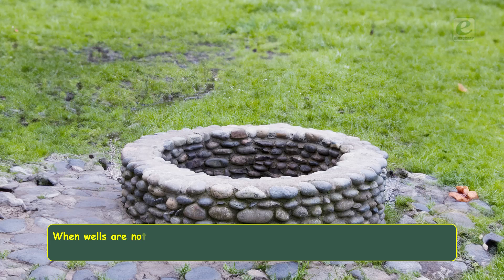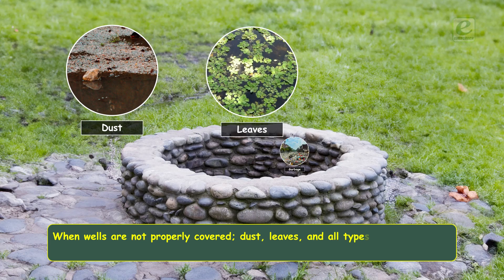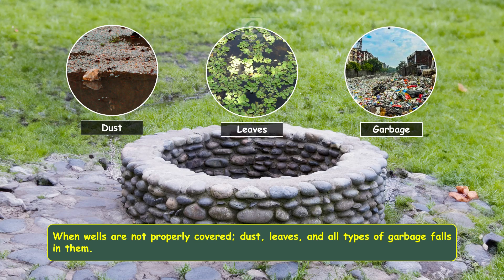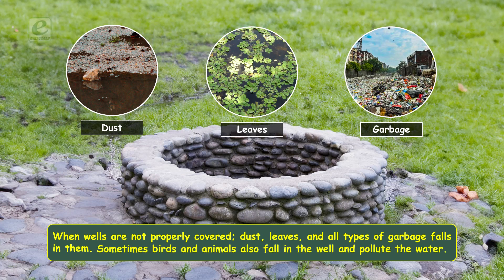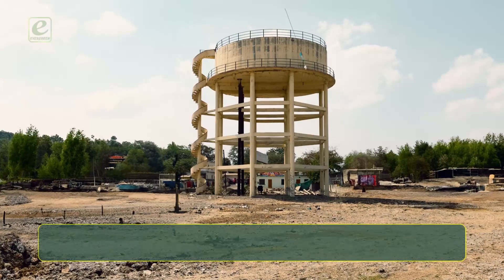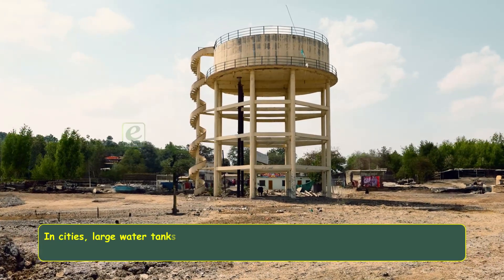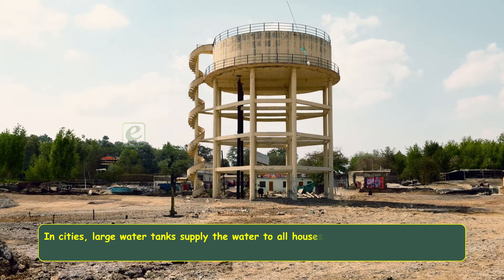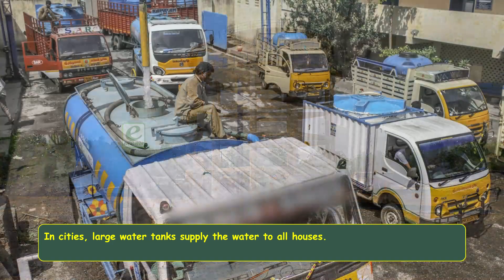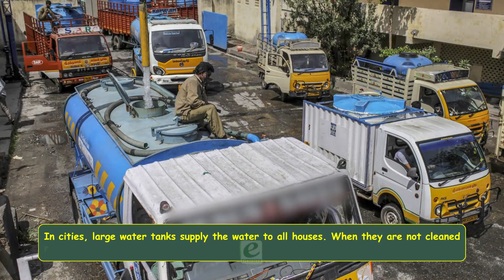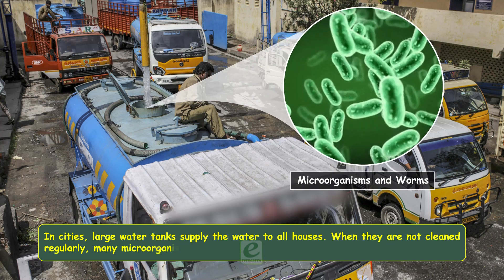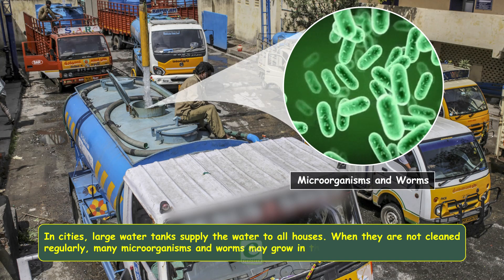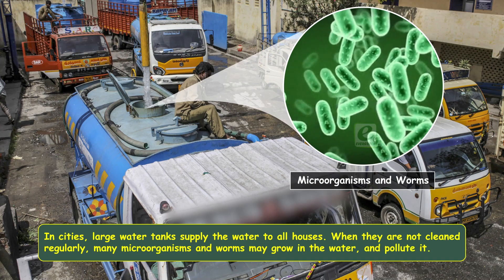When wells are not properly covered, dust, leaves, and all types of garbage fall in them. Sometimes birds and animals also fall in the well and pollute the water. In cities, large water tanks supply water to all houses. When they are not cleaned regularly, many microorganisms and worms may grow in the water and pollute it.